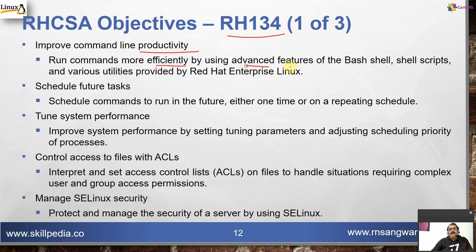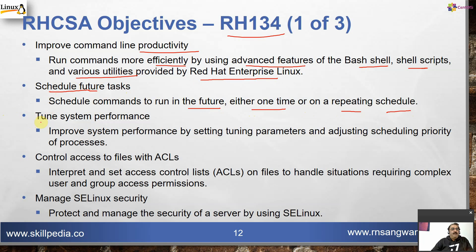RH134 covers: improve command-line productivity — run commands more efficiently using advanced features of the Bash shell, shell scripts, and various utilities provided by Red Hat Enterprise Linux. Schedule future tasks — schedule commands to run in the future, either one time or on a repeating schedule. Tune system performance — improve system performance by setting tuning parameters and adjusting scheduling priority of processes using the nice and very-nice commands.